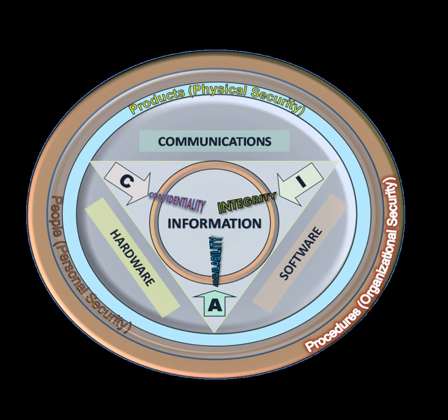In the mid-19th century more complex classification systems were developed to allow governments to manage their information according to the degree of sensitivity. The British government codified this, to some extent, with the publication of the Official Secrets Act in 1889. By the time of the First World War, multi-tier classification systems were used to communicate information to and from various fronts, which encouraged greater use of code-making and breaking sections in diplomatic and military headquarters. Encoding became more sophisticated between the wars as machines were employed to scramble and unscramble information. The Enigma machine, employed by the Germans to encrypt the data of warfare and successfully decrypted by Alan Turing, can be regarded as a striking example of creating and using secured information.